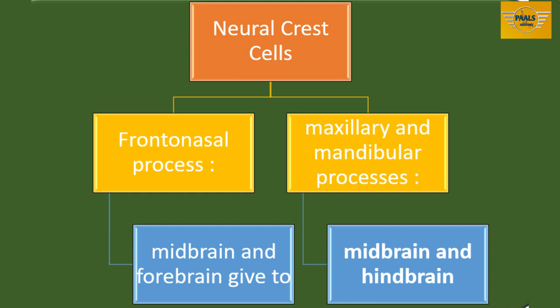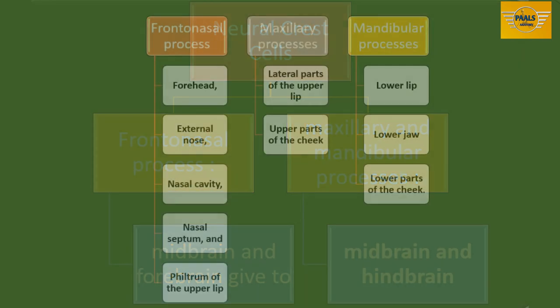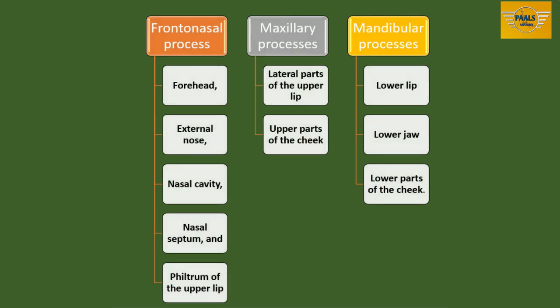In this lecture, we will first show how these five processes are derived, then show what structures arise from them and how they come together to form the various parts of the face. From the frontonasal process, we will have the forehead, the external nose, the nasal cavity, nasal septum, and the philtrum developing.